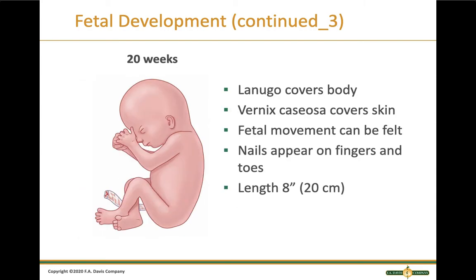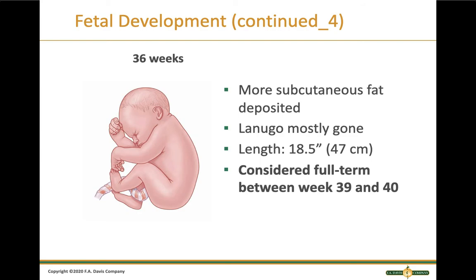The eyes are developed by 12 weeks but the eyelids are fused shut. Around 20 weeks, lanugo — a fine hair — covers the body, and vernix covers the skin, a waxy layer that helps the baby pass through the birth canal. Fetal movement can be felt at 20 weeks, and fingernails and toenails appear. After that, it's mostly growth and fat deposition. By 36 weeks the lanugo is mostly gone and a baby born at 36 weeks will likely be fine. Between 39 and 40 weeks is considered full term.